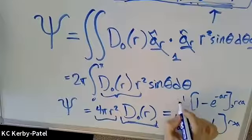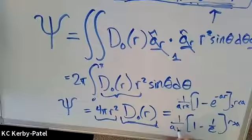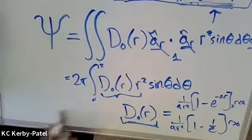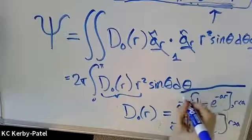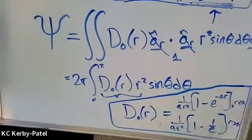we end up with one over a r squared over here and one over a r squared over here, to end up with this expression for the magnitude of our electric flux density.